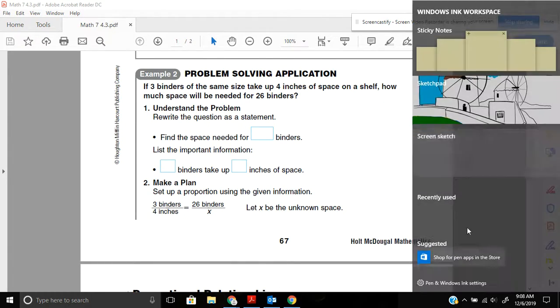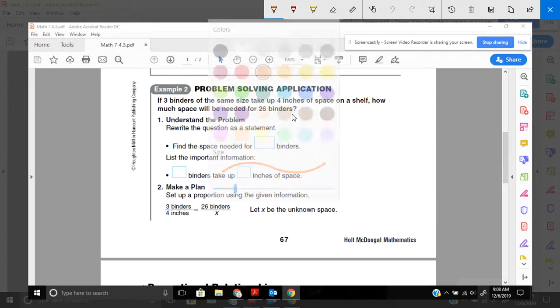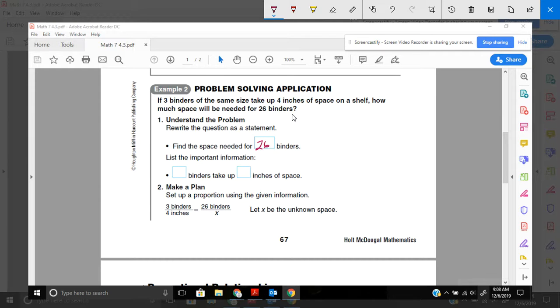Let's look at more of a word problem in example 2. It says if 3 binders of the same size take up 4 inches of space on a shelf, how much space will be needed for 26 binders? 3 binders of the same size take up 4 inches. How much space do you need for 26? So let's rewrite the problem. In total, the space needed, we need 26 binders. 3 binders take up 4 inches.